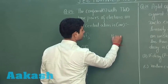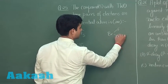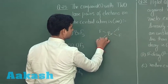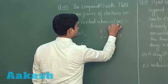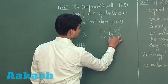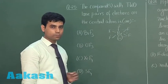BrF5 has square pyramidal structure in which bromine has one lone pair.